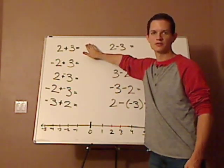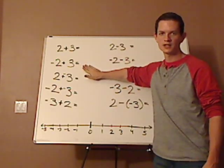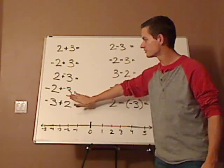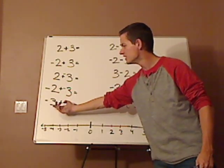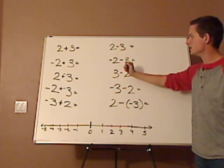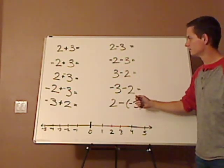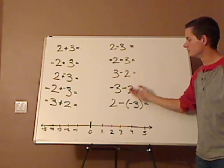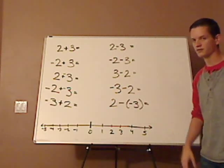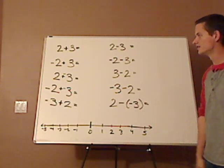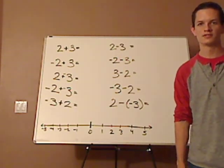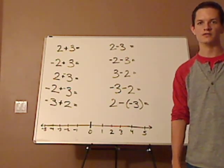This is 2 plus 3, negative 2 plus 3, 2 plus a negative 3, negative 2 plus a negative 3, and this is negative 3 plus 2. Now over here you have 2 minus 3, negative 2 minus 3, 3 minus 2, negative 3 minus 2, and then 2 minus a negative 3. If you notice, all of them are 2's and 3's. All right, so what I want you to do right now is pause the video and see if you can try and do these on your own.